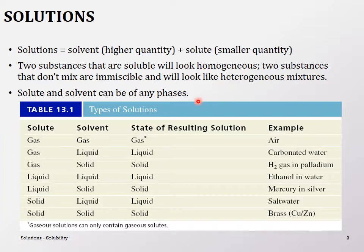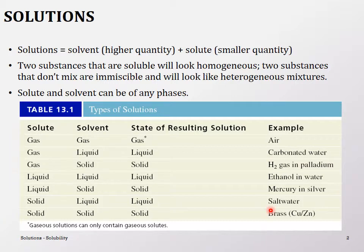A solute and solvent can be of any different phase. This table gives examples of different kinds of solutes and solvents, the phase of the resulting solution, and some examples. For instance, gas can dissolve in gas — that's the air in front of us, and it's a homogeneous solution because everything is completely mixed.